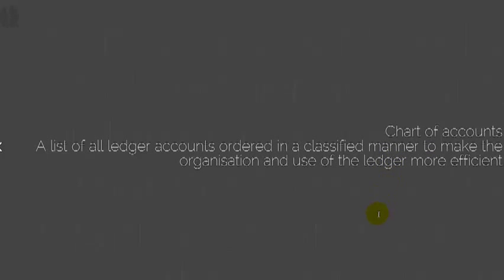A chart of accounts is an orderly list where we classify all the ledger accounts into some order so they can be easily accessed and to make the use of the ledger more efficient. One way of doing this is to classify all assets with a number starting at 1000 — so cash at bank might be 1000, accounts receivable 1100, and so on.